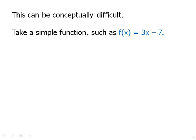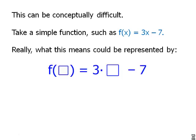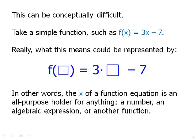This can be conceptually difficult. Take a simple function, such as f of x equals 3x minus 7. So this is a rule that says, give me any input, I'll multiply it by 3, and then I'll subtract 7. And that will be the output. Really, writing it that way, we could write it in this form: f of empty box equals 3 times empty box minus 7, with the understanding that we could put anything we want into that empty box as long as we put the same thing into the empty box on the other side. We could put a number into that empty box. We could put an expression into that empty box. And so really what's going on, the x of the function equation is an all-purpose holder for anything - a number, an algebraic expression, or another function. So we have to expand our understanding of what it is, what x means, what it can hold as a variable.